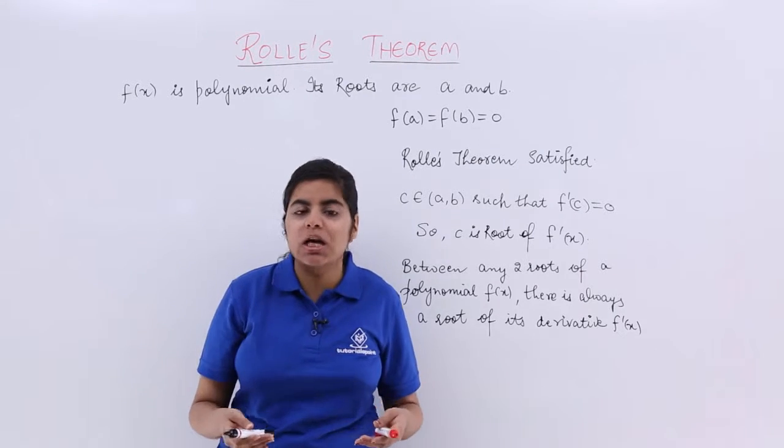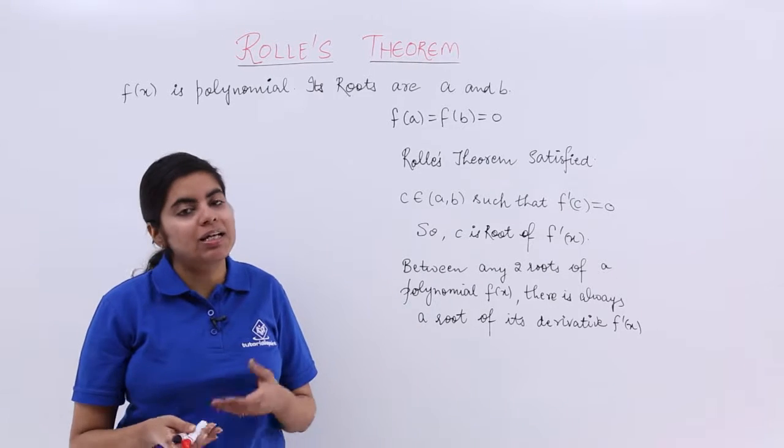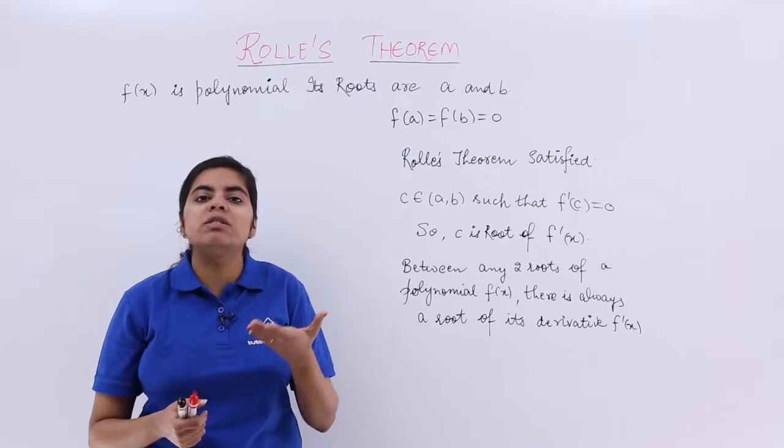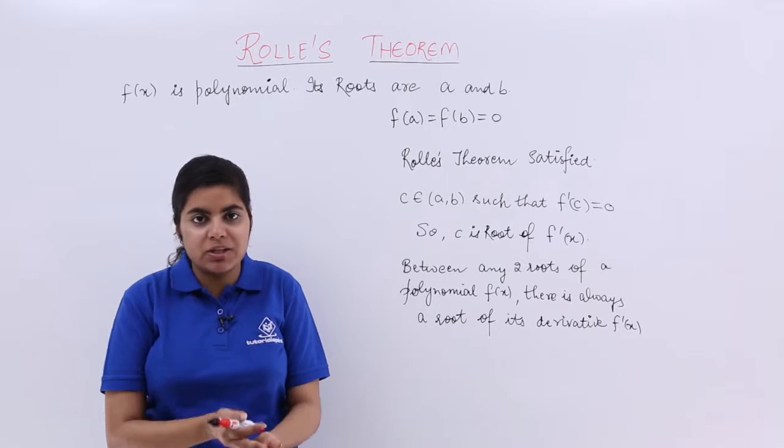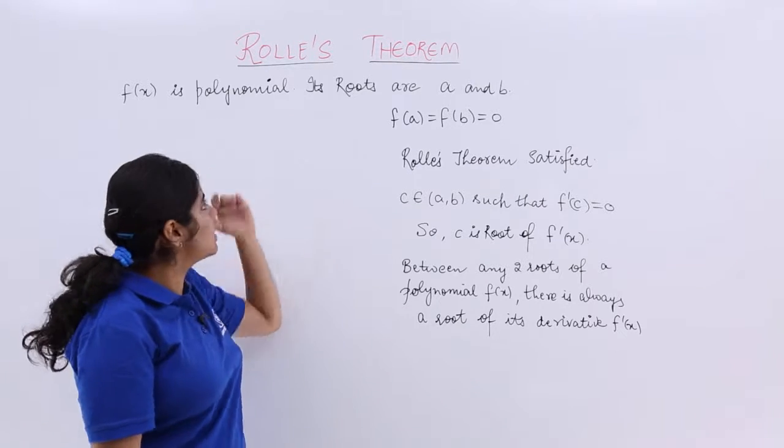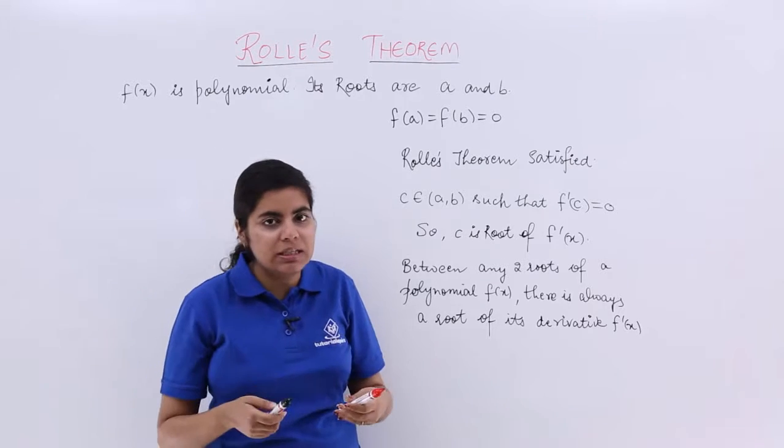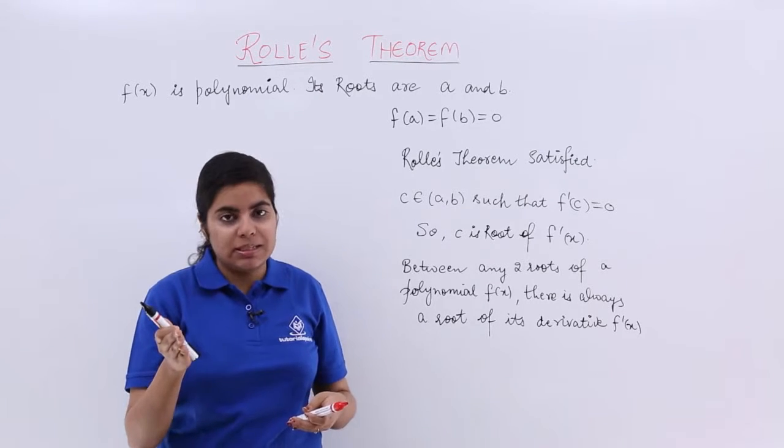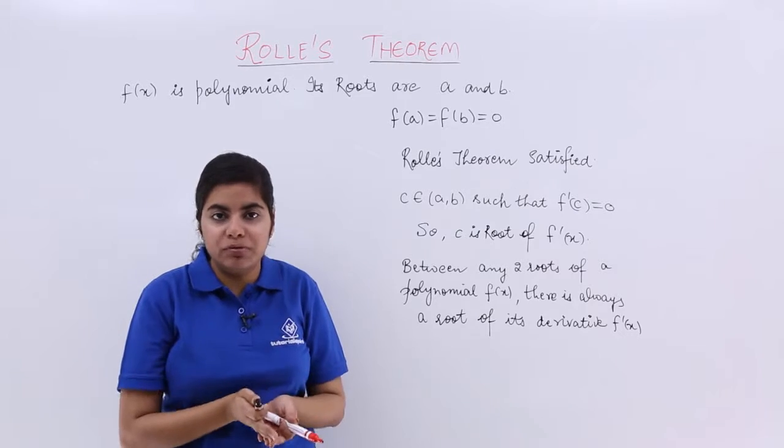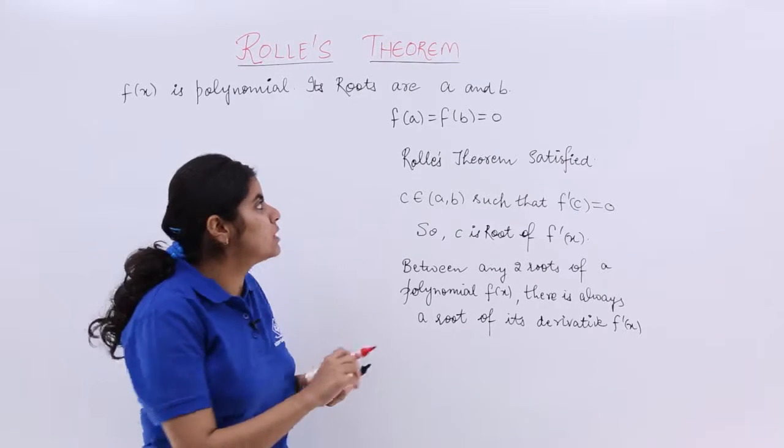According to it, we have f(x) as a polynomial function. f(x) being a polynomial function will always be continuous and differentiable. And we also have supposedly the roots given to us. For a polynomial function, we have been given there are two roots a and b.